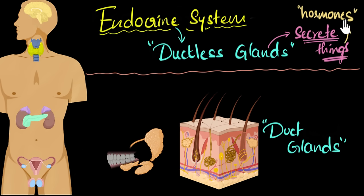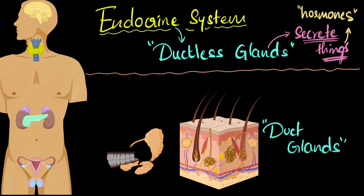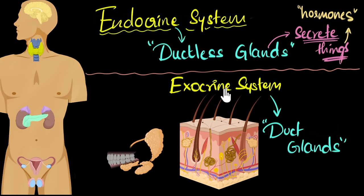Hormones are messenger molecules — we've talked about them in a previous video. So we're going to talk about what are the major ductless glands found in our body and what are the major hormones that they secrete. Just for the sake of naming, the system of duct glands is technically called the exocrine system. We will concentrate only on the endocrine system. All right, let's begin.